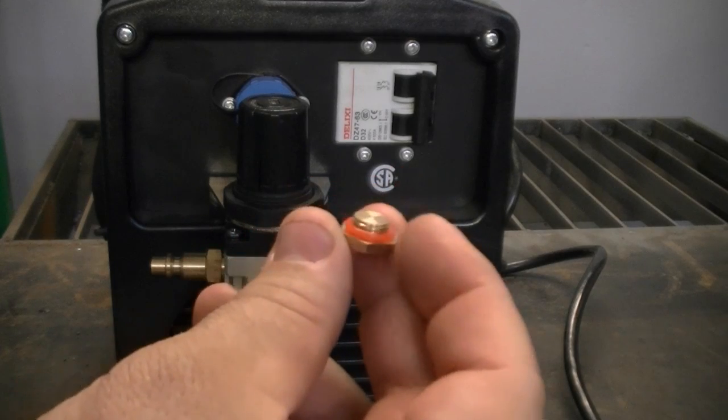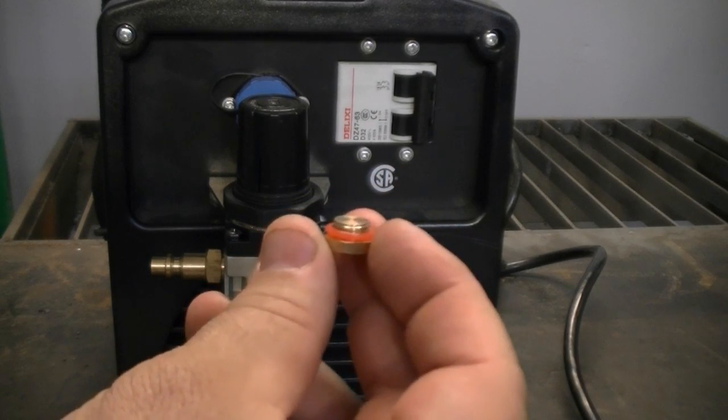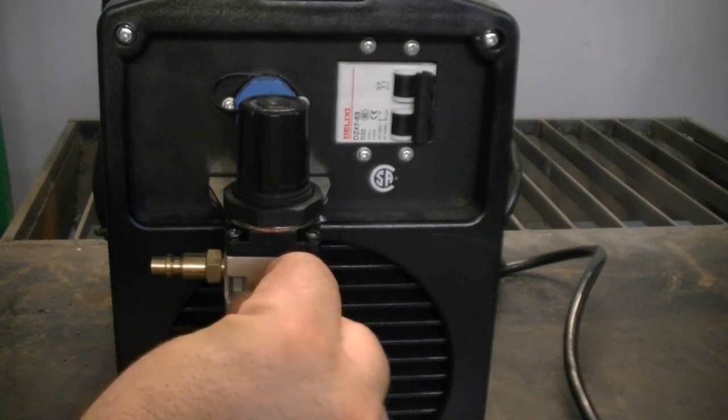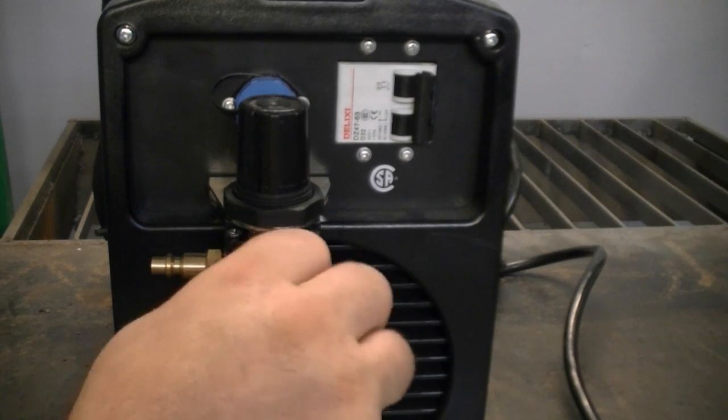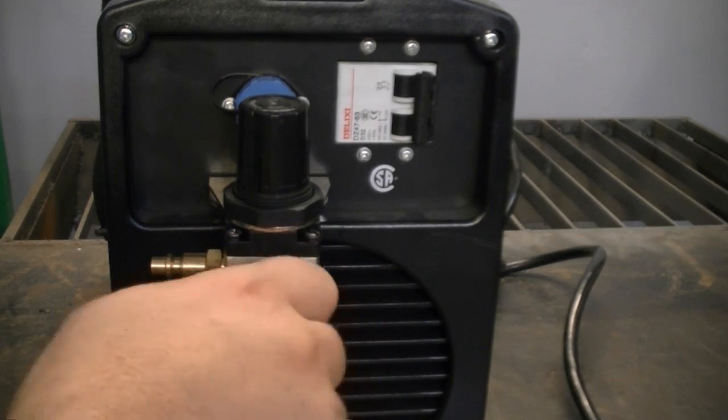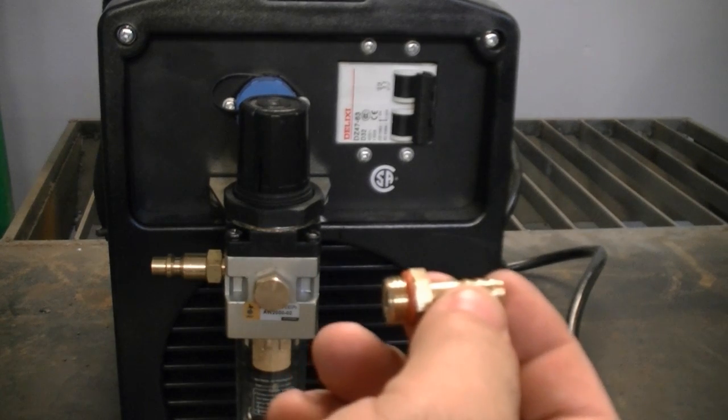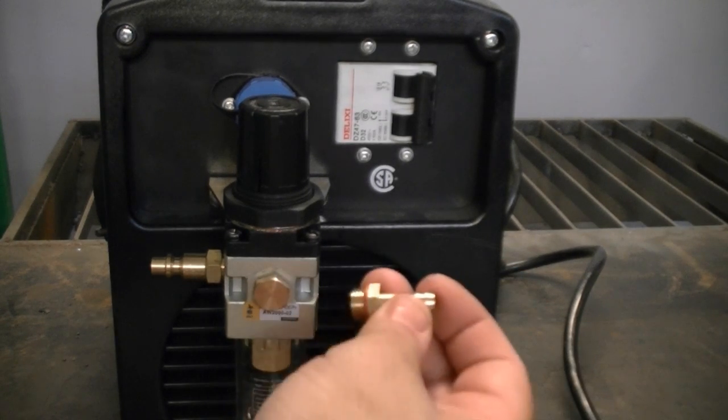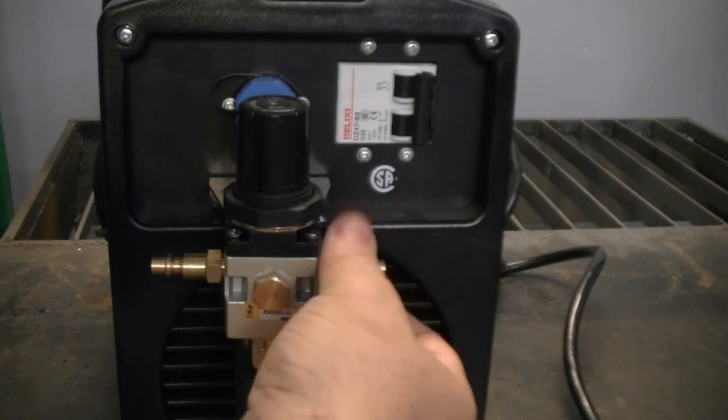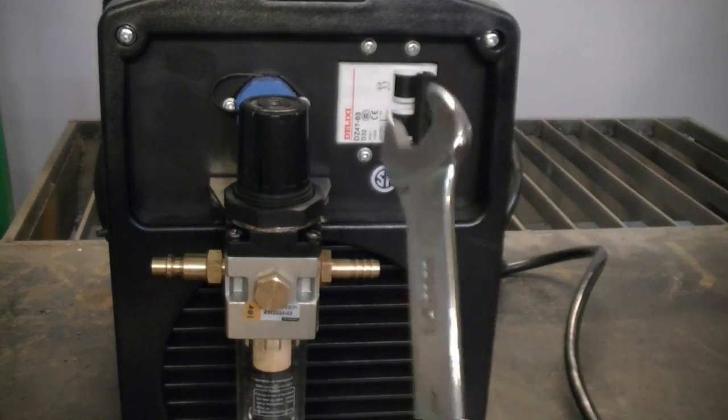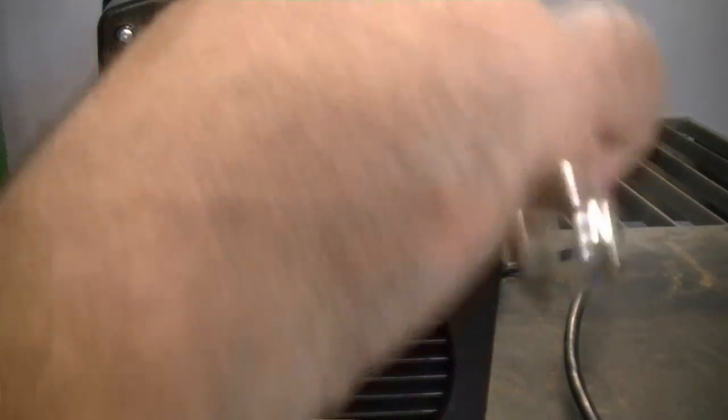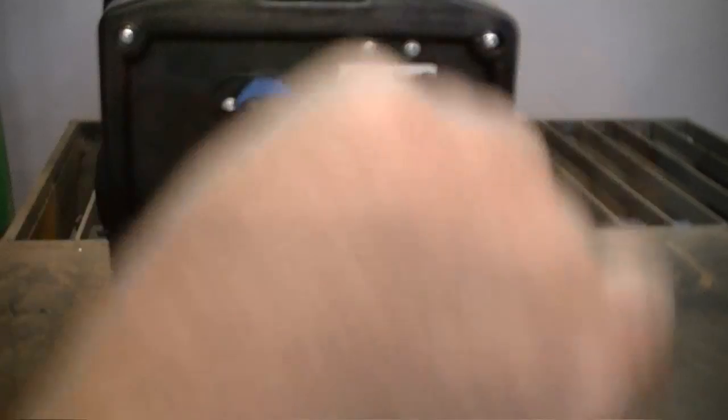Next, locate your small plug with the O-ring installed. Install it in the center hole. Now locate your hose barbed fitting. This will go on the right side of your air regulator, where it says out. Finally, take a 14 millimeter wrench and tighten all your fittings.